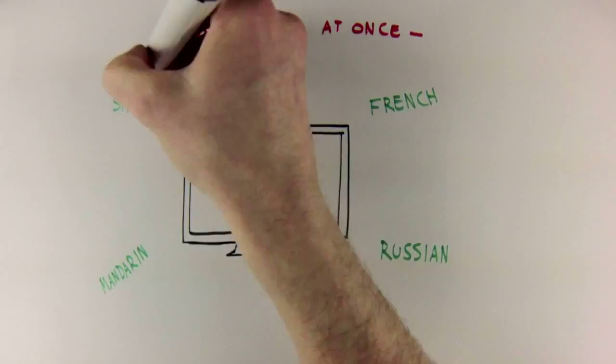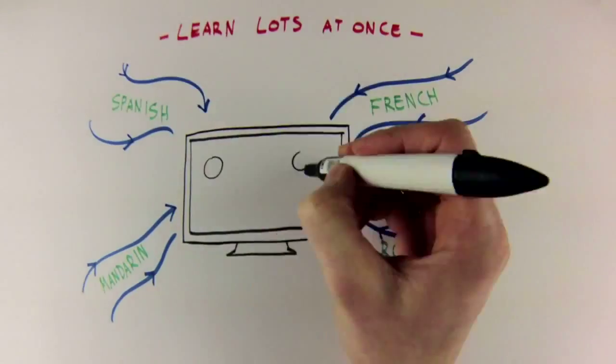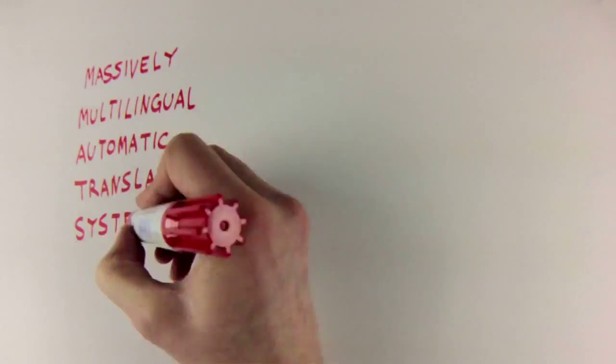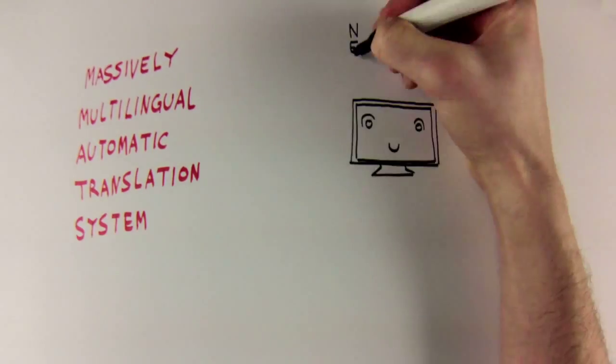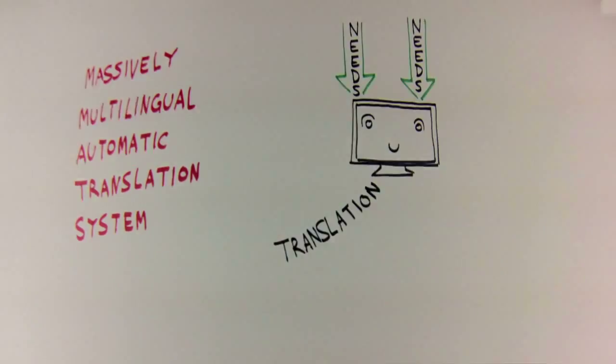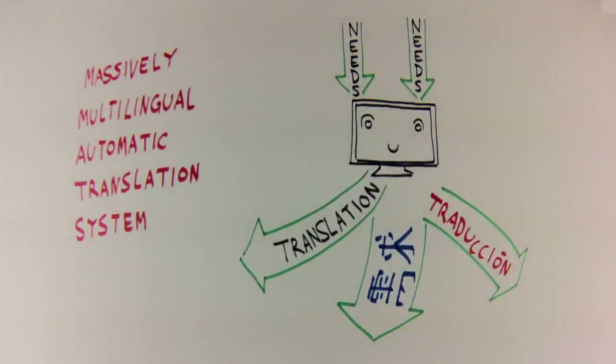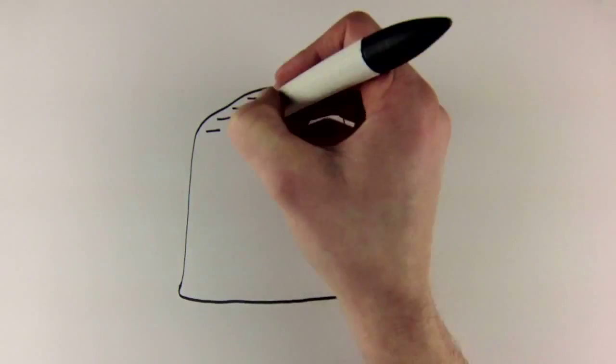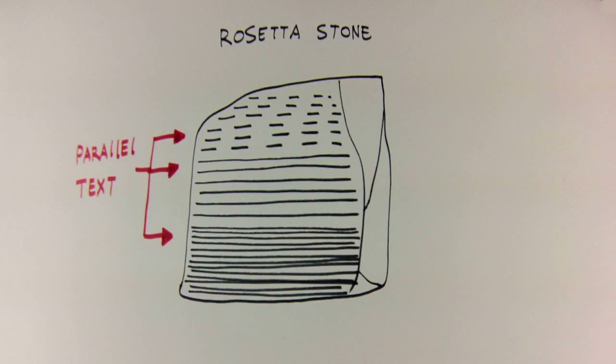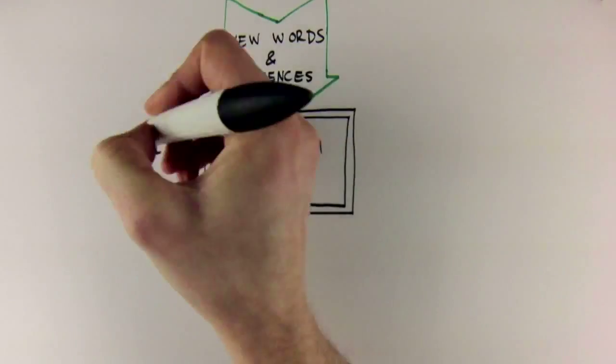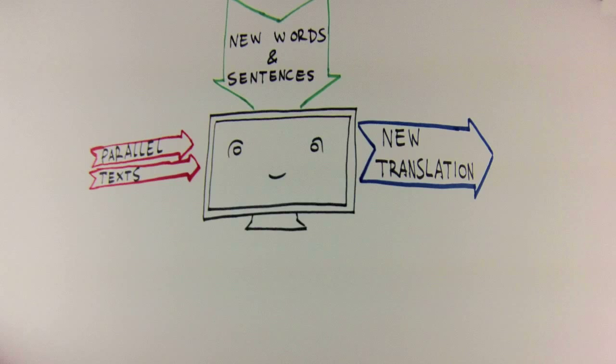These massively multilingual automatic translation systems hold huge potential to help us tackle our rising translation needs. But the interesting bit is that the driving force behind teaching these systems how to translate is something that's been around since ancient times. Remember parallel texts, like the Rosetta Stone? Using this kind of data and modern statistical analysis algorithms, the computers can learn how to translate new words, sentences, and phrases that it's never seen before.